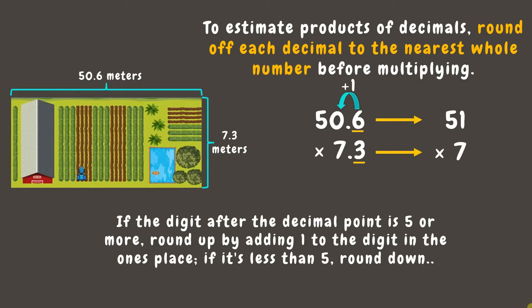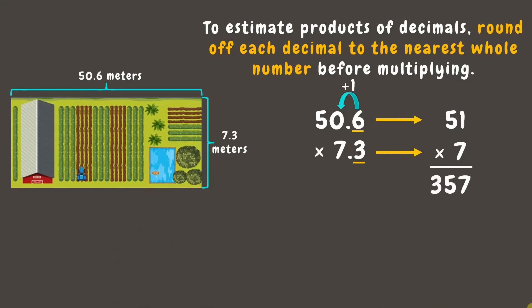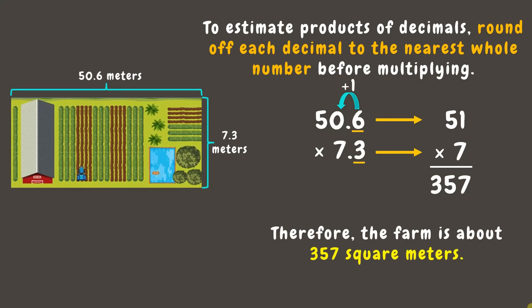Now, let's multiply. 51 times 7 is 357. Therefore, the estimated area of the farm is 357 square meters.